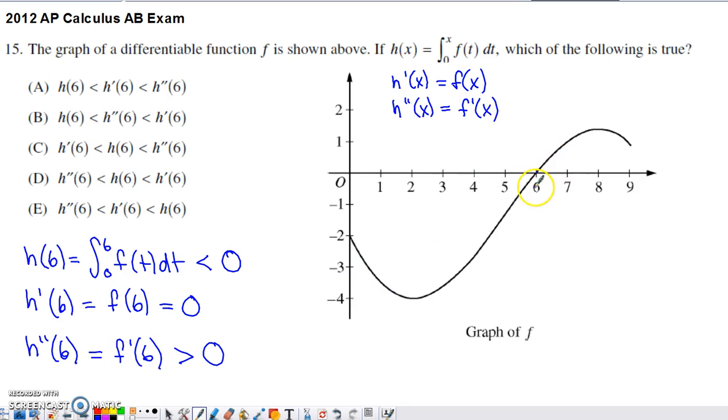And the slope of the graph at 6 is definitely positive. So we have the function value for h at 6 being negative.